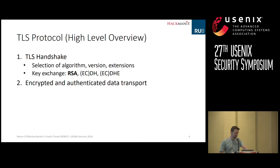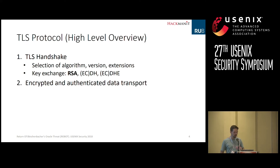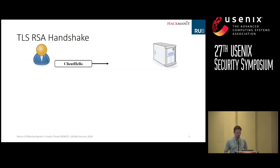On a very high level, the TLS protocol is divided into two phases. In the first phase — the TLS handshake — the two parties, client and server, have to negotiate algorithms, TLS version, extensions, and so on, and they perform a key exchange. There are three types of key exchanges: RSA key exchange, Diffie-Hellman key exchange, and Diffie-Hellman ephemeral key exchange. Afterwards, they can proceed with encrypted and authenticated data transport. For this talk, the RSA TLS key exchange is of crucial importance.